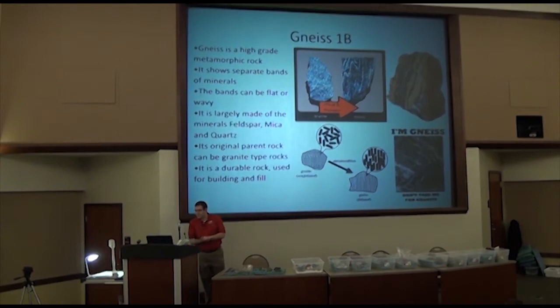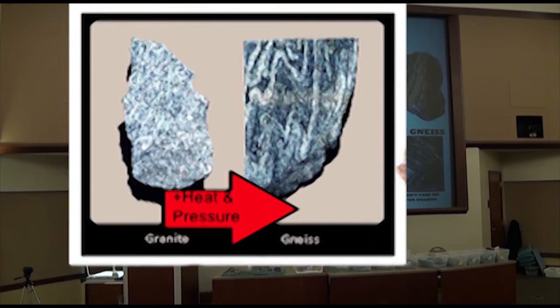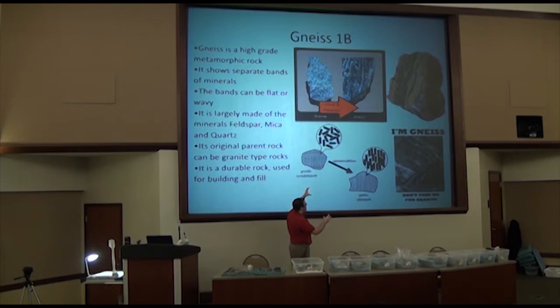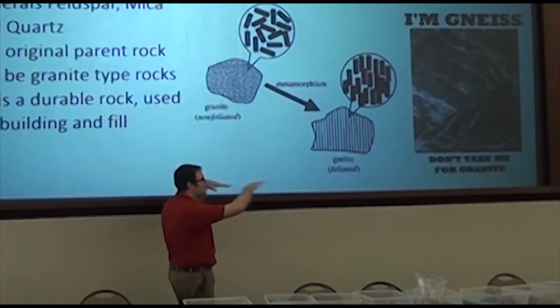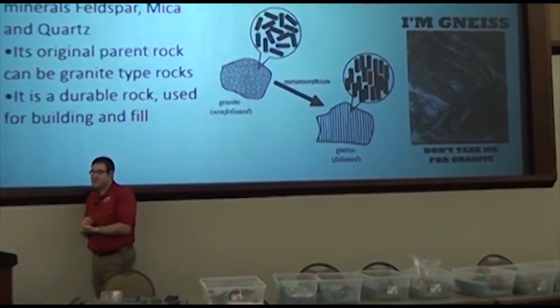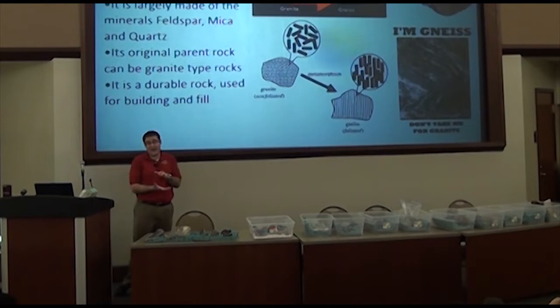What actually happens — the reason these bands form — is when gneiss undergoes so much heat and pressure, the mineral crystals, which are all mixed up in granite or diorite (common parent rocks for gneiss), get squished into different lines. That's why you see the usually black and white stripes. It's gotten quite a bit of pressure — it's a pretty high grade metamorphic rock.